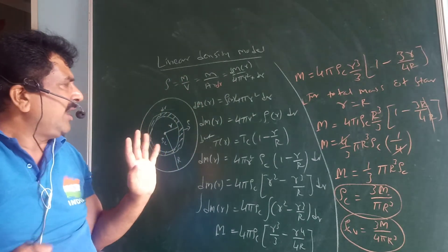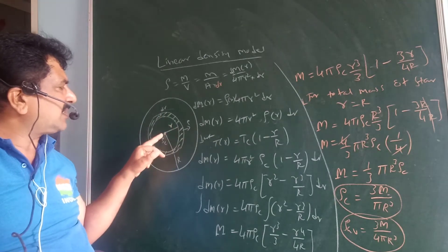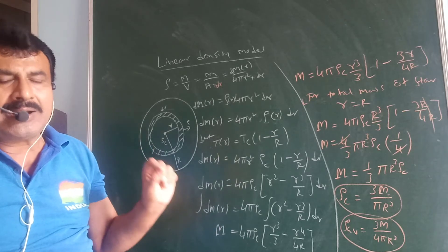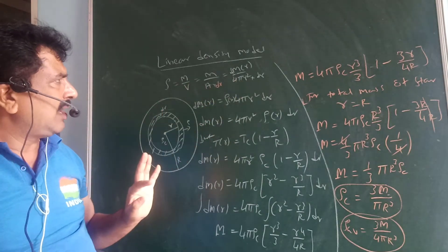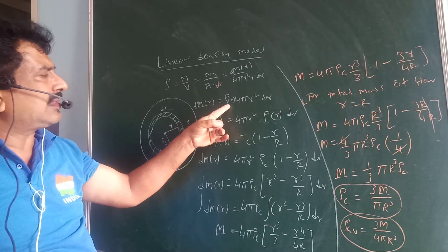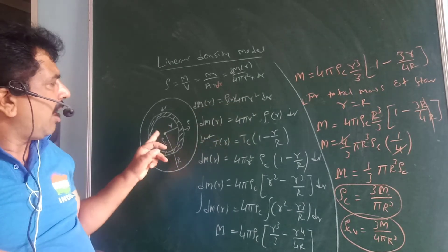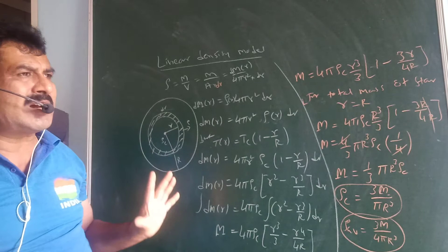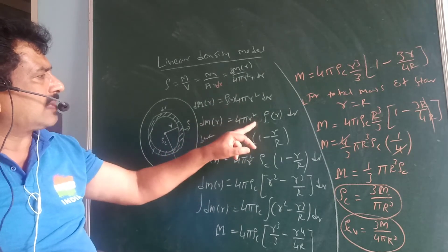Using ρ = m/V, at a distance r from the core with thickness dr, the small amount of mass dm at that layer is given by: dm(r) = ρ(r) × 4πr² × dr, where ρ(r) is the density at distance r inside the star, 4πr² is the area of the spherical layer, and dr is the thickness of the layer.